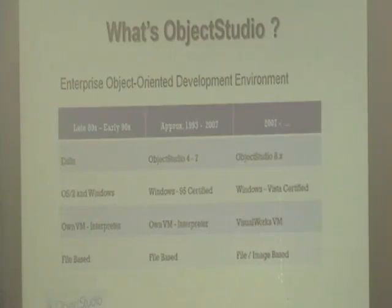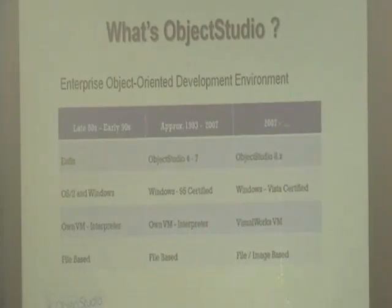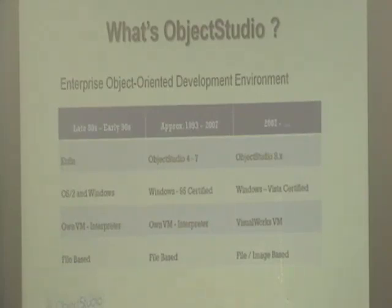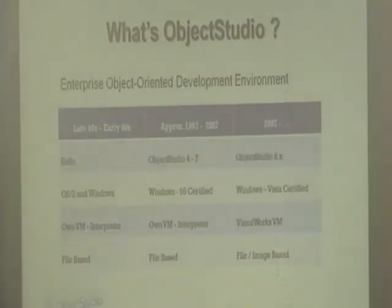Around mid-2004, our friend Georg started working to port Object Studio to run on the VisualWorks VM. Around 2005, the first alpha releases appeared, and in 2007 the public studio release came out, running on top of VisualWorks. It was still Windows-based because all the UI is Windows-based.